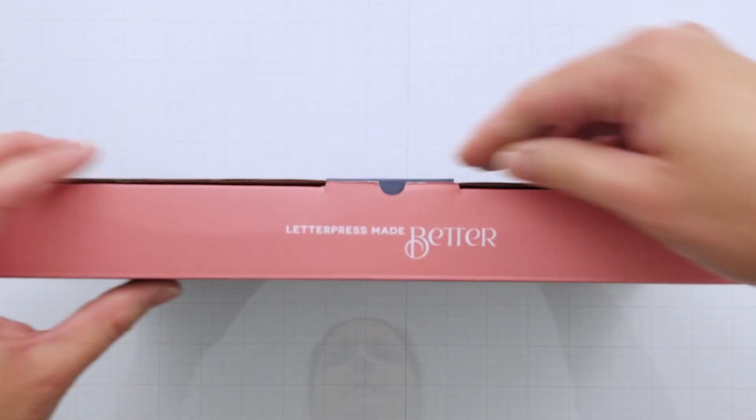The Better Press is a letterpress system that you use with your manual die cutting machine to produce the look of really beautiful stationery with a detailed impression that you can actually feel.